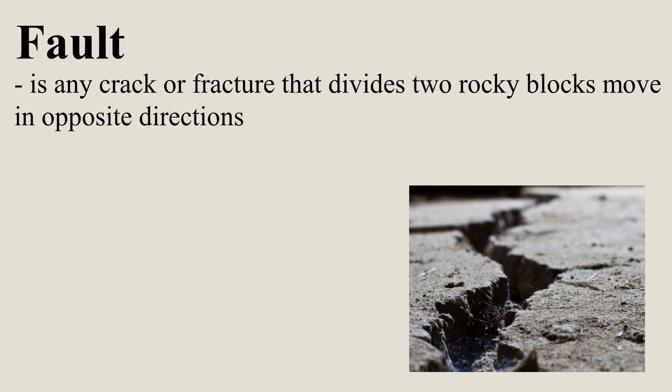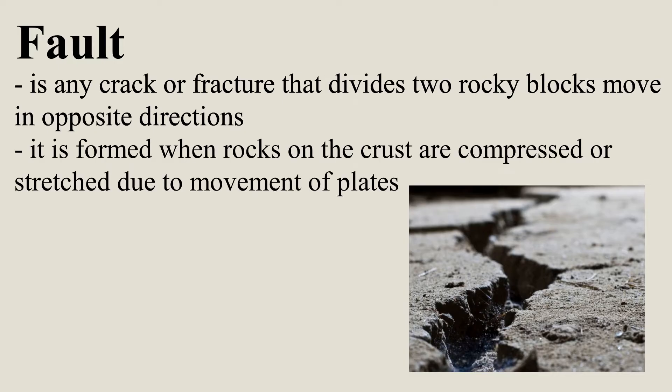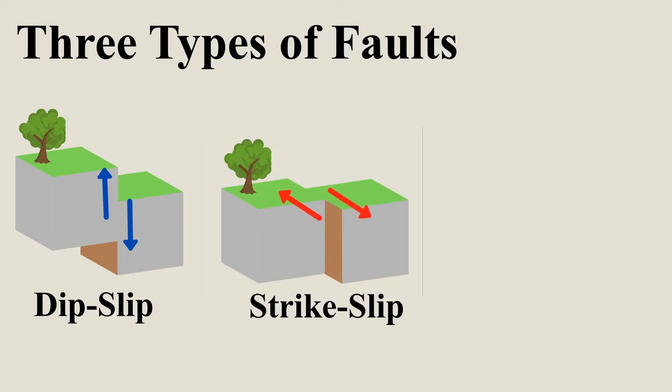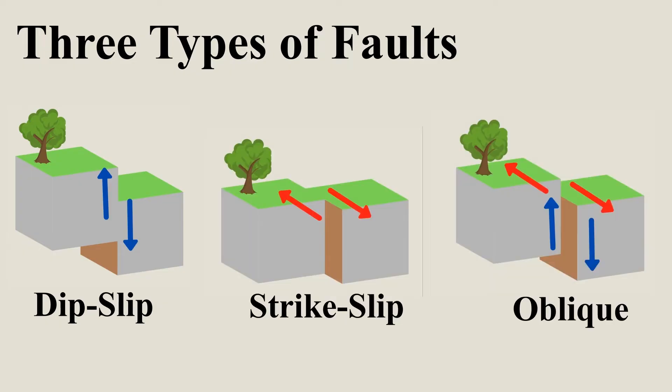A fault is any crack or fracture that divides two rocky blocks that move in opposite directions. It is formed when rocks on the crust are compressed or stretched due to the movement of plates. There are three types of faults: the deep slip, the strike slip, and the oblique.